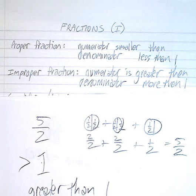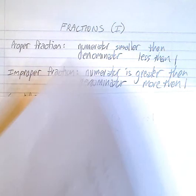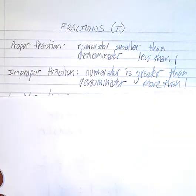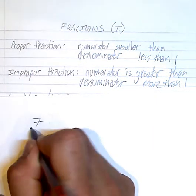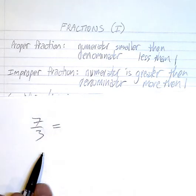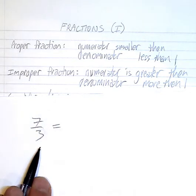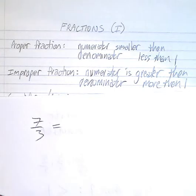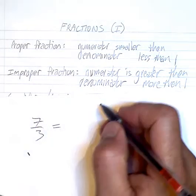So we'll look at something like this. If we have 7 thirds, this is what they call an improper fraction, and you want to write it down as a proper, like a mixed number. Something that's not here is what they call a mixed number. So if you look at this, thirds is what we broke it into.